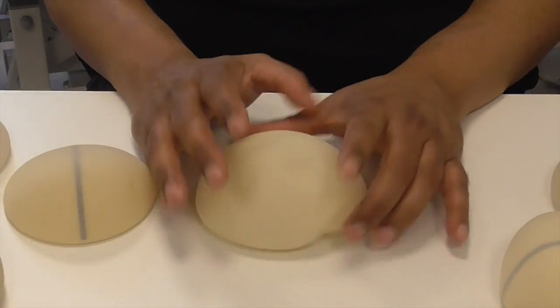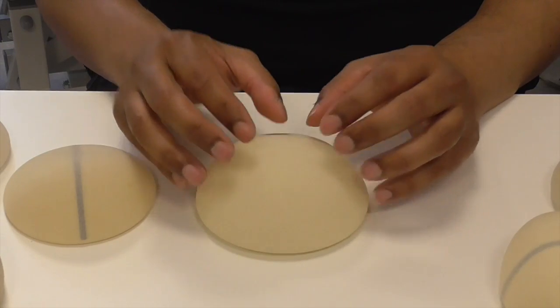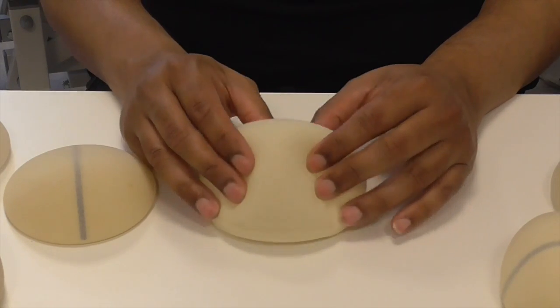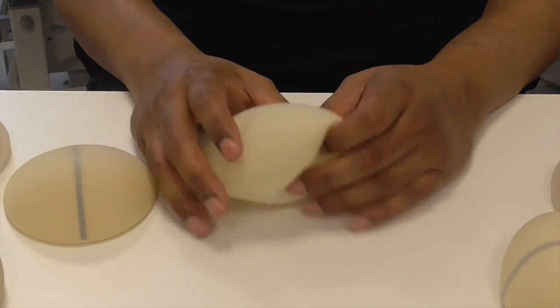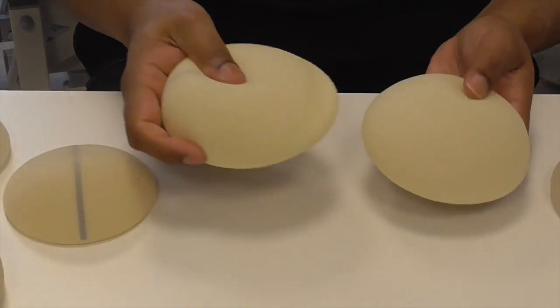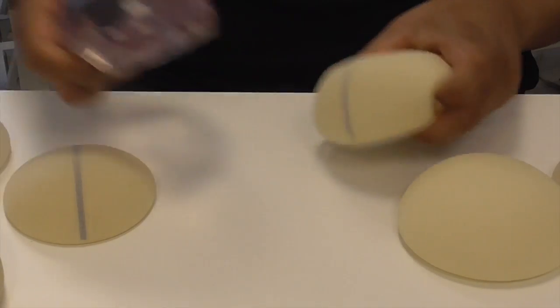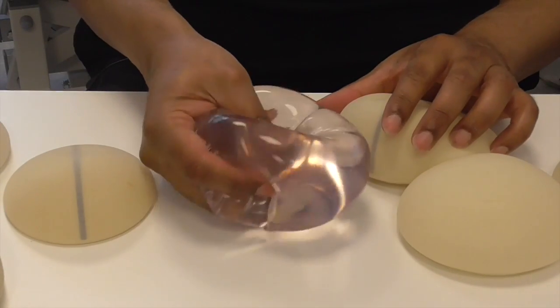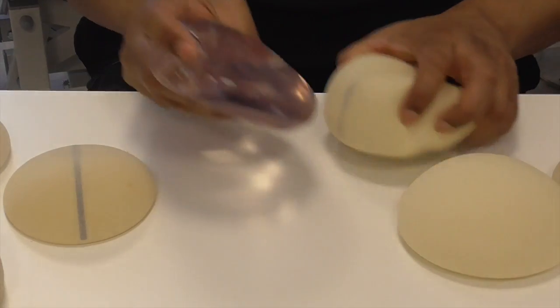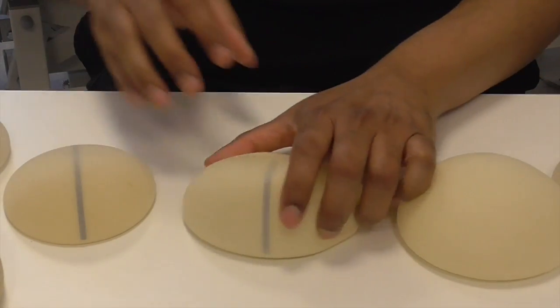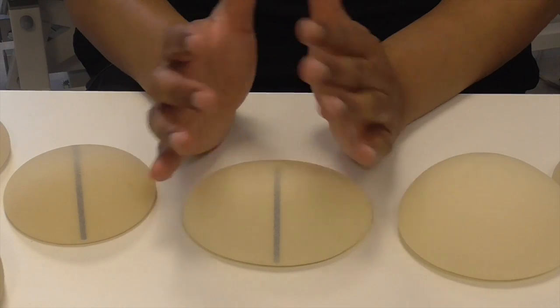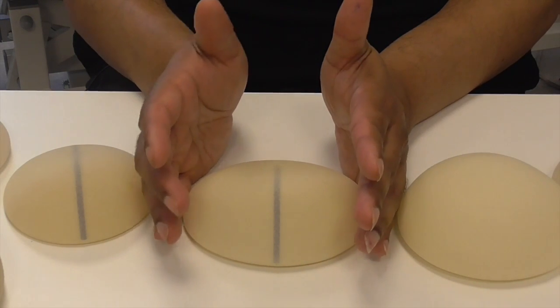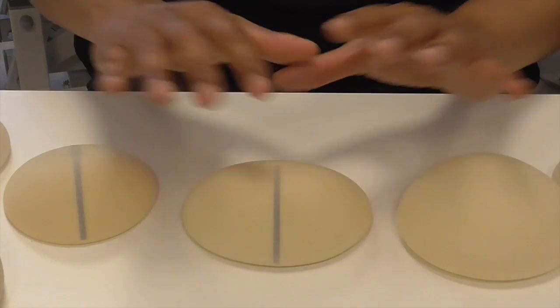The final thing you've got to look at is the cohesiveness of the gel. The gel itself comes in different levels of cohesiveness. This is a bit firmer, that's quite firm, while this implant is quite squishy. One can look at the different cohesiveness because the firmer the implant is, the less rippling you'll get, but it may feel less natural.